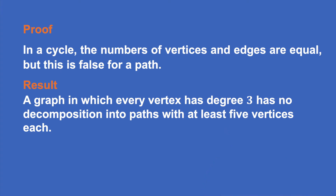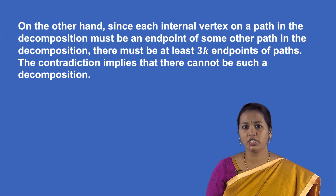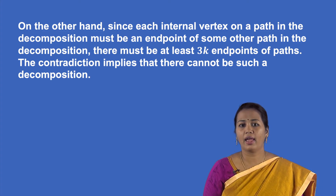A result states that the families A (paths) and B (cycles) are disjoint: A ∩ B = ∅. The proof: in a cycle the number of vertices and edges are equal, but this is false for a path. Next result: a graph in which every vertex has degree 3 has no decomposition into paths with at least 5 vertices each. Proof by contradiction — since every path has two endpoints and at least three internal vertices, the number of paths is at least n/2 and at most n/3, which is impossible.